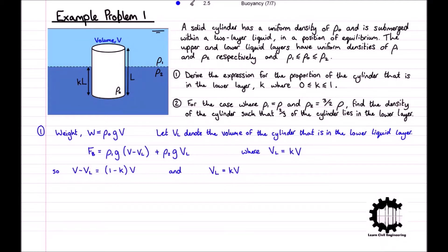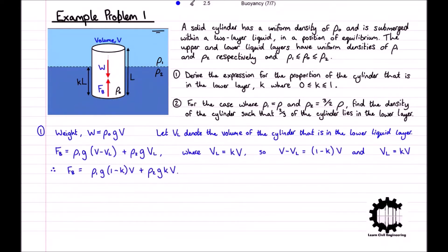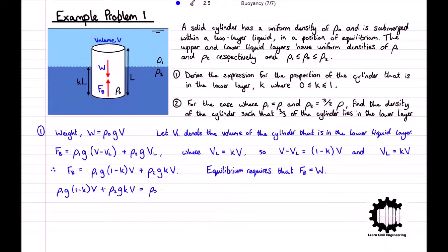Substituting both of these into our equation for the buoyancy force, we get F_B is equal to rho_1 g times (1 minus k) times V plus rho_2 g k V. Since the cylinder and both liquid layers have uniform densities and the axis of the cylinder is vertically aligned, W and F_B must have the same vertical line of action. Additionally, the cylinder is in equilibrium, so F_B must equal W. Therefore: rho_1 g (1 minus k) V plus rho_2 g k V equals rho_0 g V.